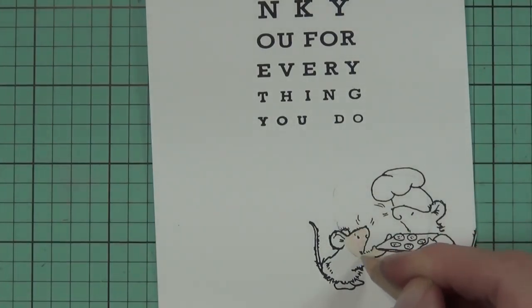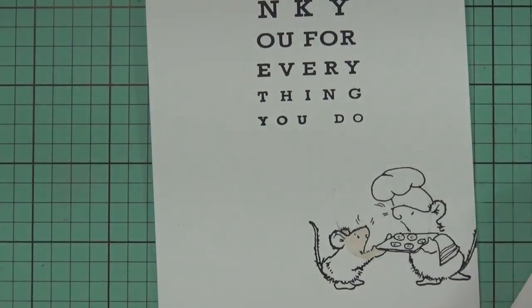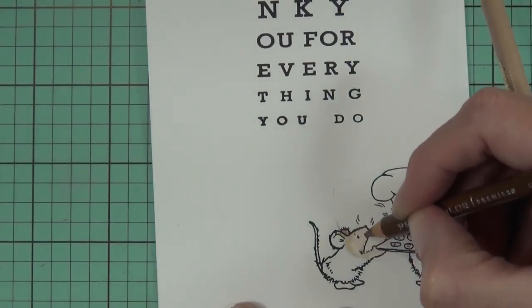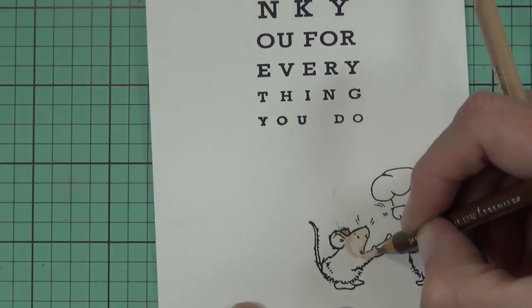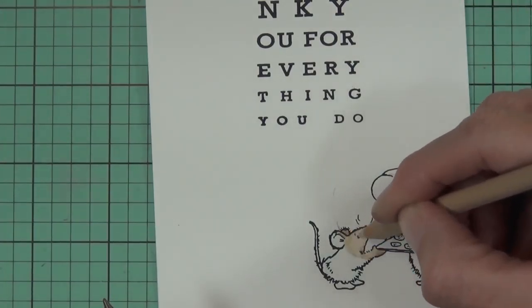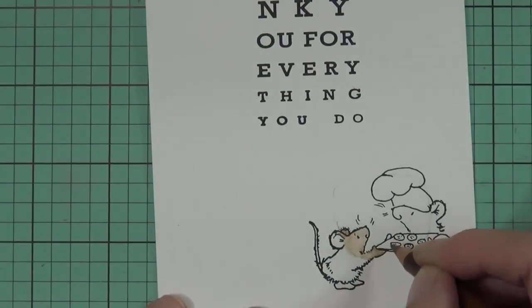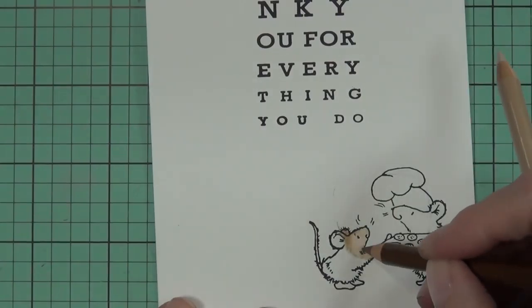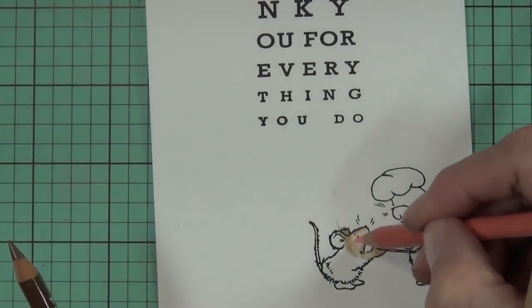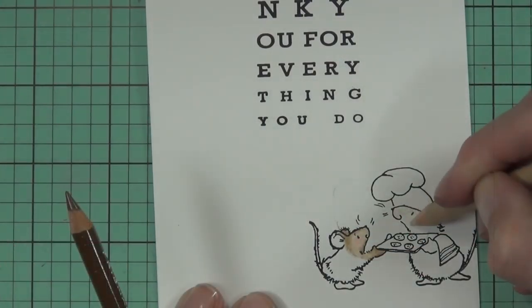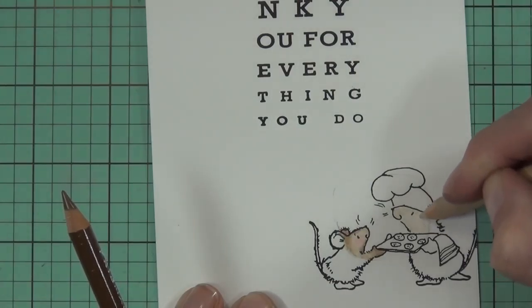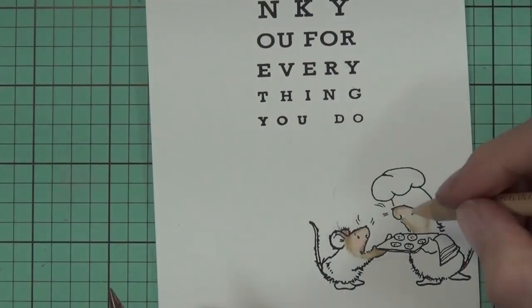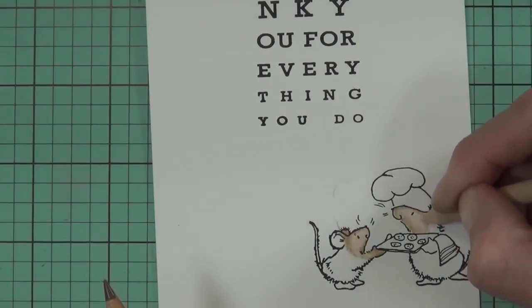These little mice are from the Happy Critters set as well and I have stamped this and the sentiment on the front of a top fold card. What I did was actually work out where the glasses go and I made some really light pencil lines around there. What I'm doing here is I'm actually only coloring within that area.